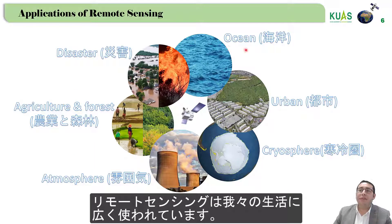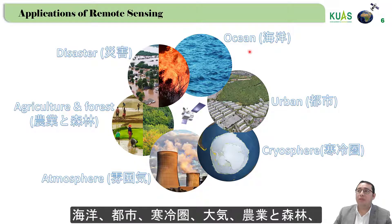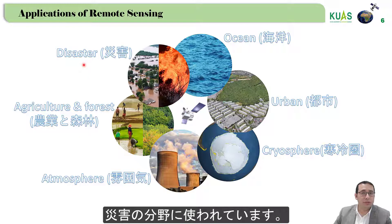Remote sensing has wide applications in our life. We can use it for the ocean, urban areas, cryosphere, atmosphere, agriculture and forest, and for disaster monitoring.